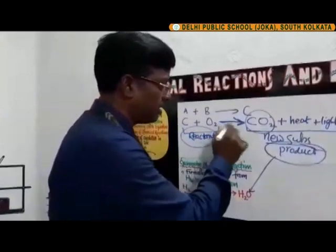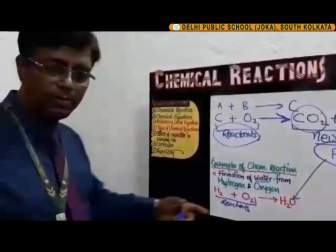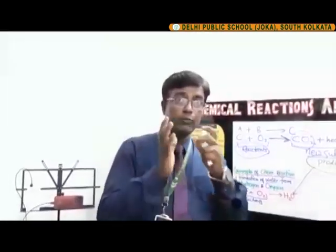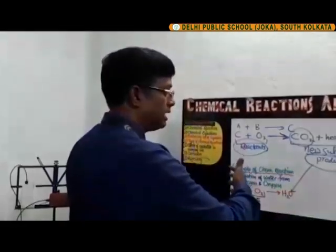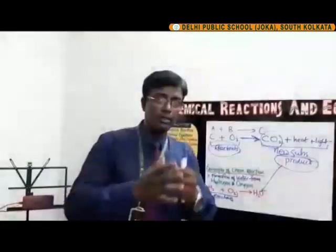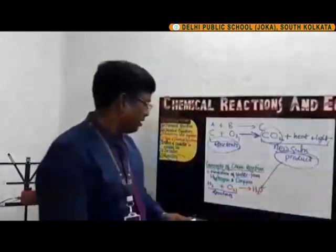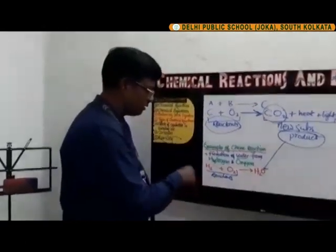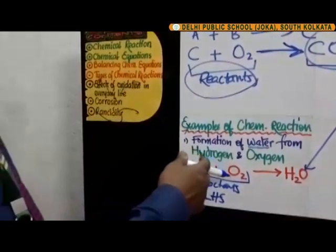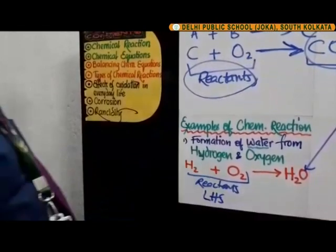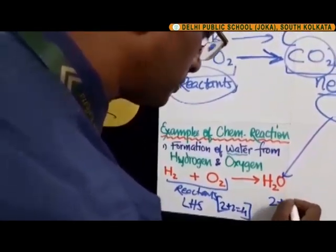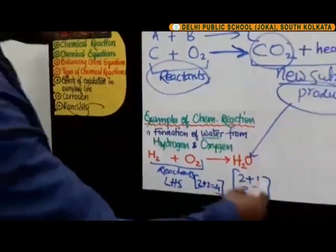Let's move to balancing of chemical equations, which is very important. A balanced chemical equation always has an equal number of atoms of each element on the left-hand side as well as the right-hand side — equal atoms of reactants and products. For example, on the left-hand side we have two hydrogen atoms and two oxygen atoms — four total — whereas on the right-hand side we have two plus one, equal to three. So this is not balanced, as we don't have equal numbers of atoms on both sides.